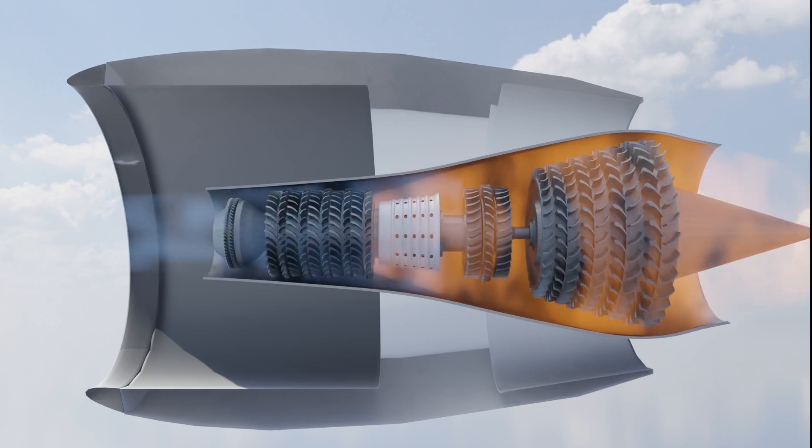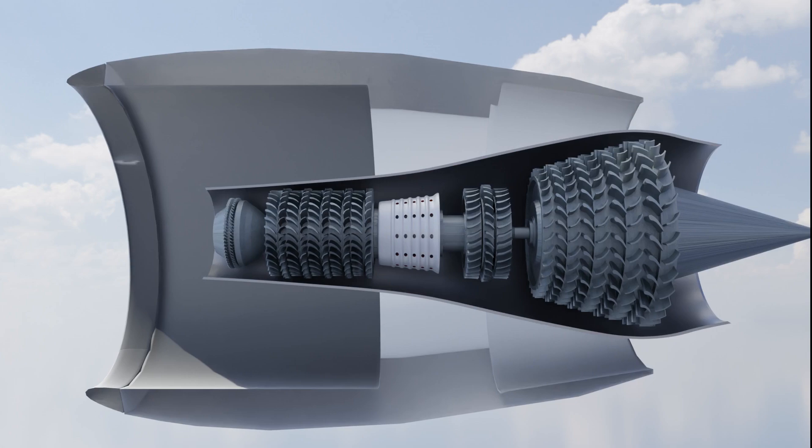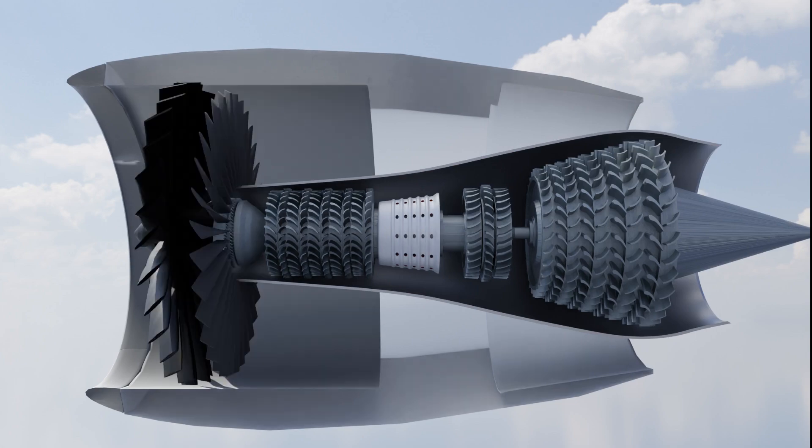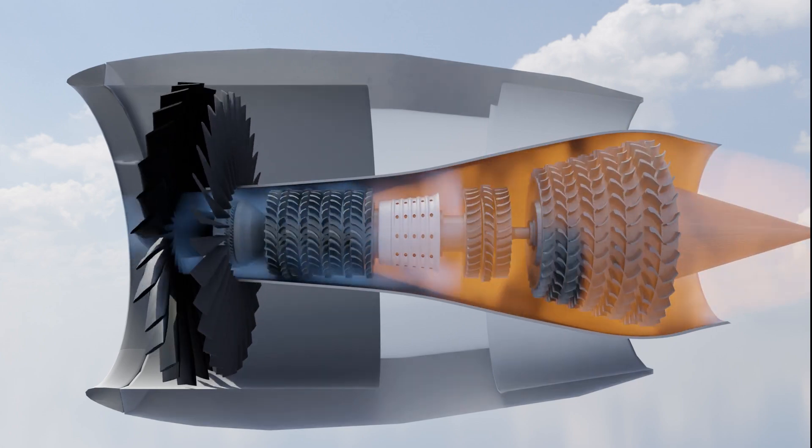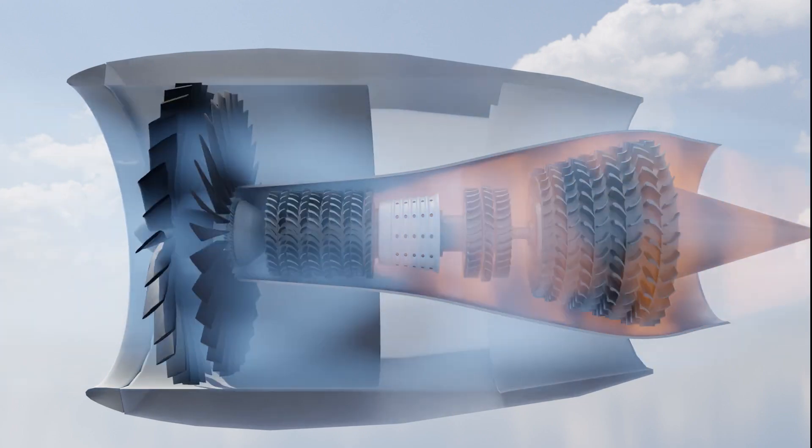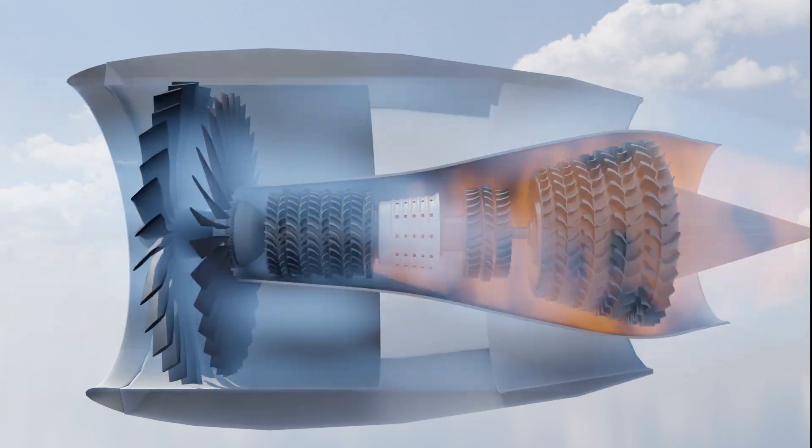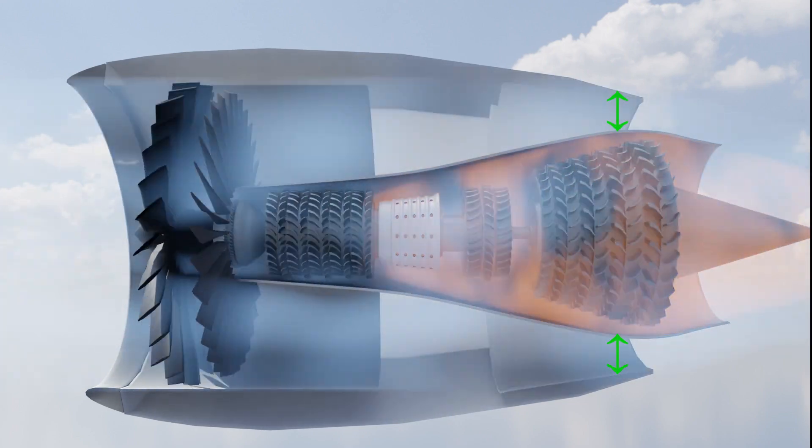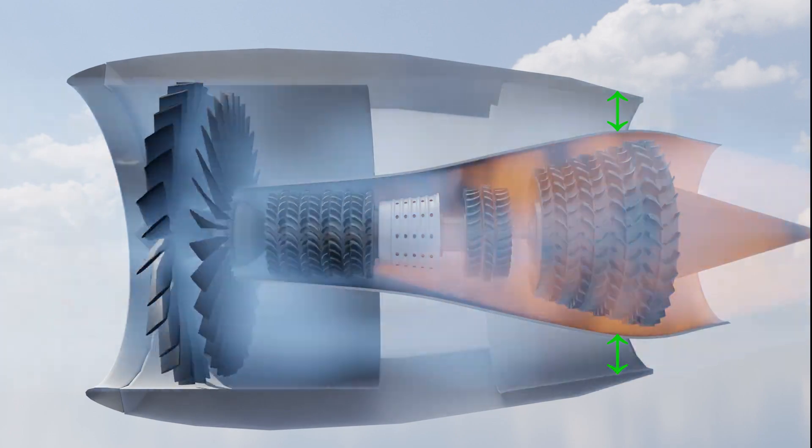A revolutionary improvement was made to this engine by simply adding a low spool fan at the entry of the engine. This type of engine is called turbofan engine. The turbofan engine bypasses a lot of air, the narrowing duct provides a good amount of jet velocity to the bypassed air.